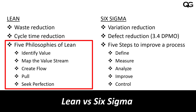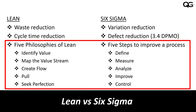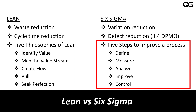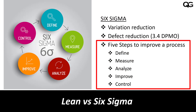In six sigma, we also have five steps to improve a process, known as DMAIC: Define the process you are working on, then Measure the current performance of that process, then Analyze by doing statistical calculations and analysis. Based on that, you Improve the process. The last stage is Control, which ensures that whatever improvement you have done stays permanently.